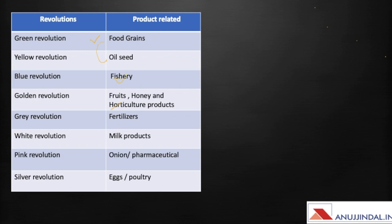The first one being green revolution, which is related to food grains, and yellow revolution to oil seed crops, blue revolution to fisheries, and golden revolution to fruits, honey, and horticulture products.